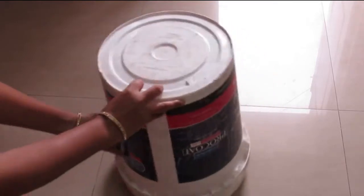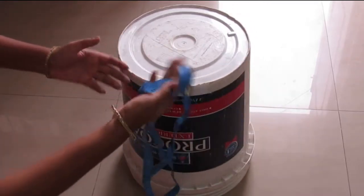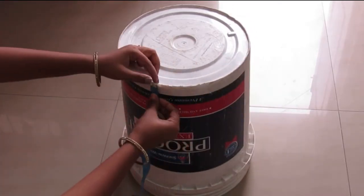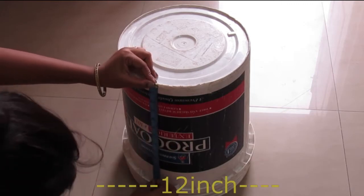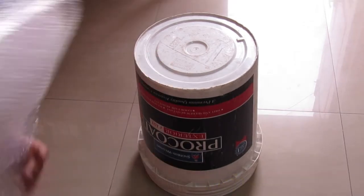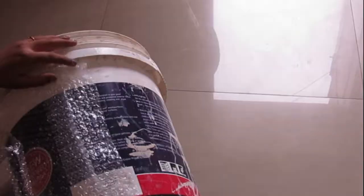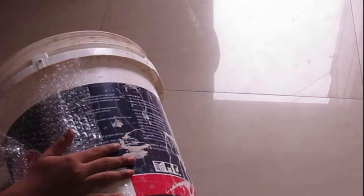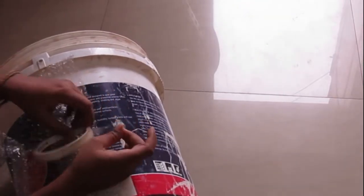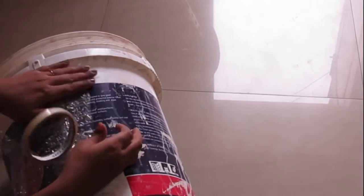So firstly we need one paint bucket like this. Make sure the bucket you are using is a bit bigger in size. Now take the measurement vertically up to this point minus 12 inches. Now we need bubble wrap and cut it into 12 inches vertically. Now we need to cover one side with cello tape like so.